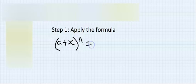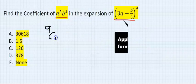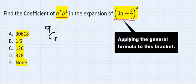Apply the formula a plus x to the power of n. This gives us n combination r, a to the power of n minus r, then x to the power of r.